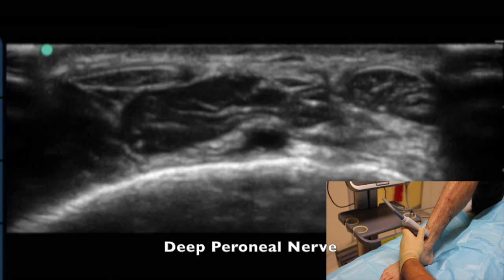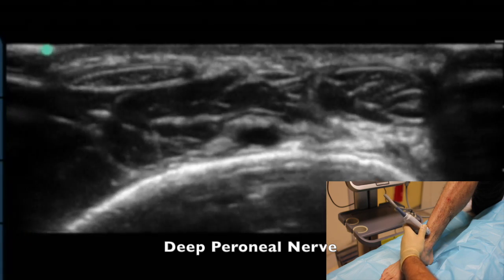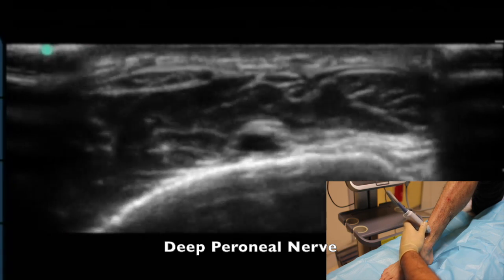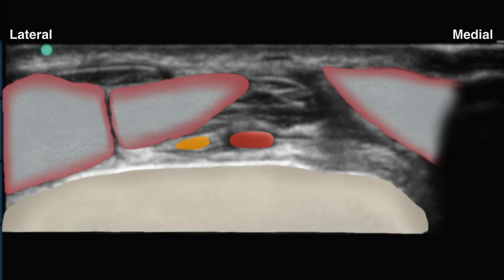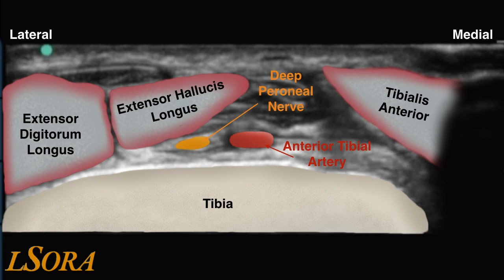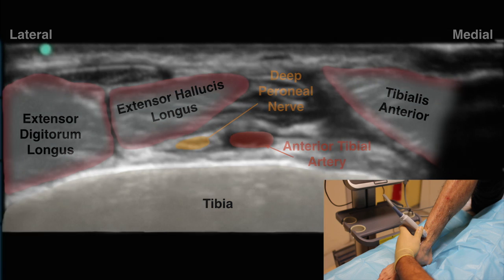To scan for the deep peroneal nerve, the probe is placed at the anterior aspect of the ankle. The anterior tibial artery is identified above the tibia, and a hyperechoic structure lying on the lateral aspect of the artery that slides over to the medial side with probe movement is identified as the deep peroneal nerve. Extensor digitorum longus, extensor hallucis longus, and tibialis anterior are also shown here for clarity.